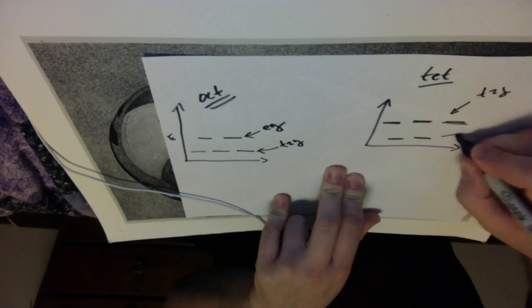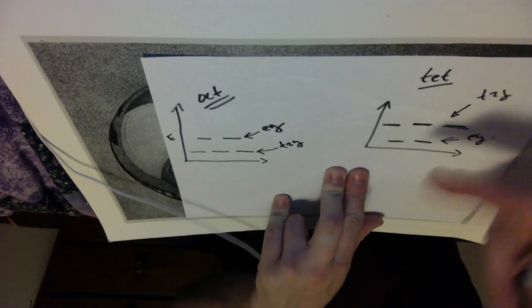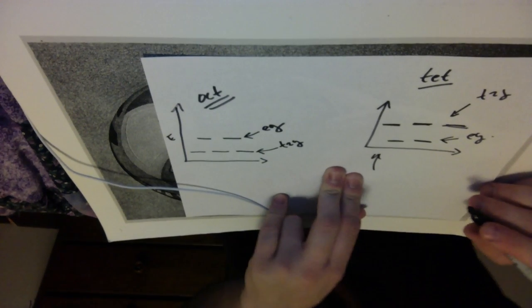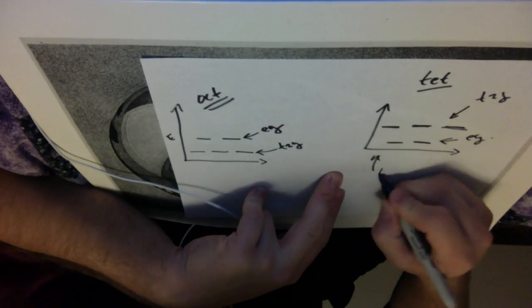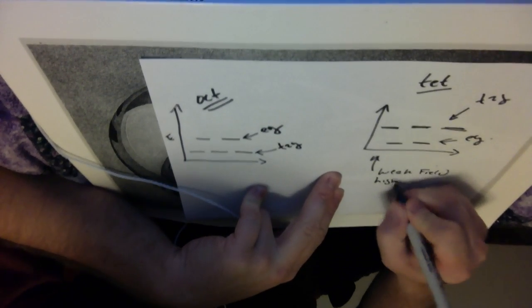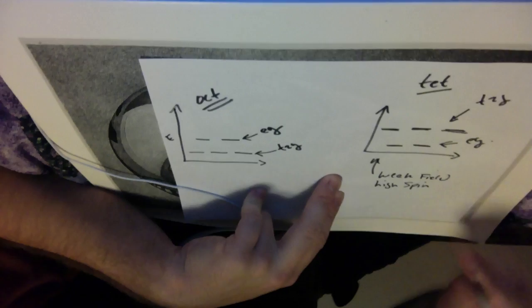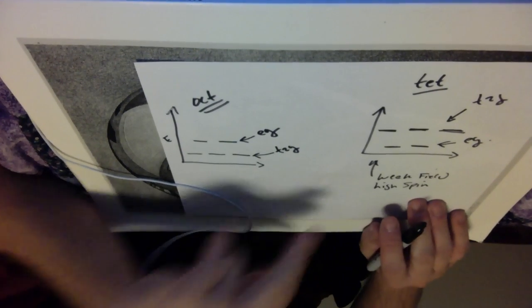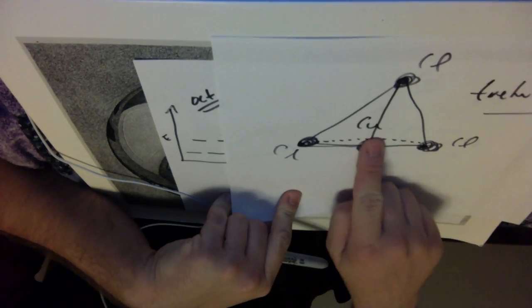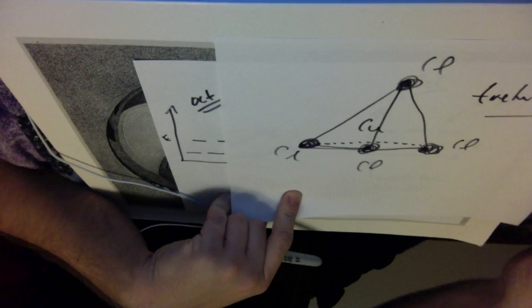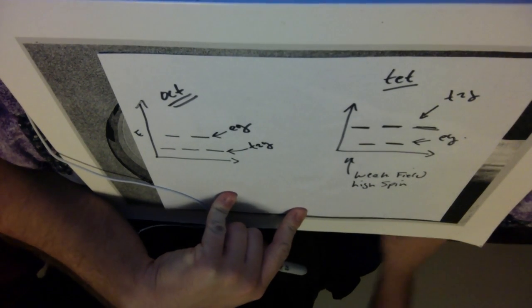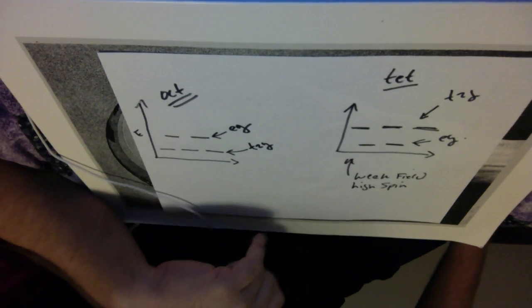And the tetrahedral geometry is almost always going to be a weak field, so it'll almost always be a high spin system. So that's kind of an exception to it. Copper two chloride is one of the exceptions that I kind of wanted to point out and the orbital energies flip, and that's that.